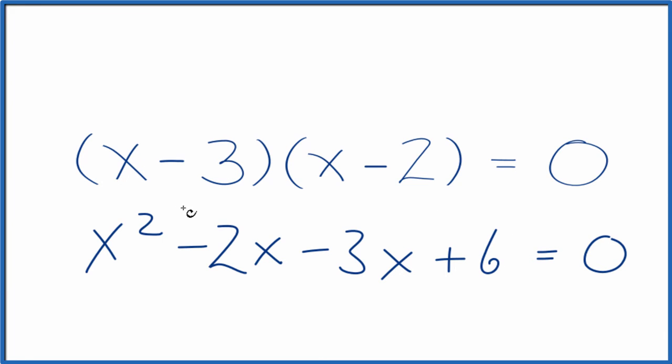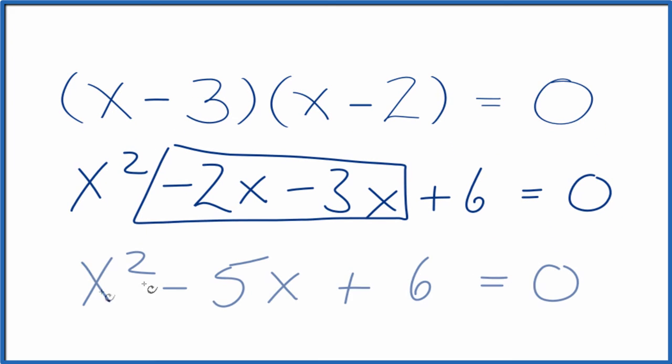equals 0. And then we can combine these here, they're both x terms, we end up with x squared minus 5x plus 6.